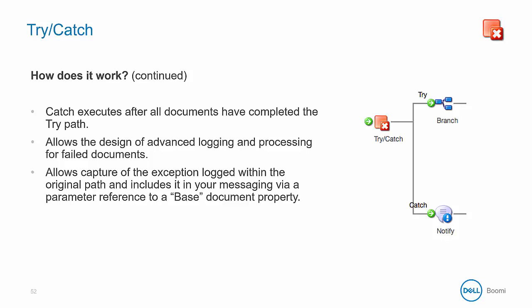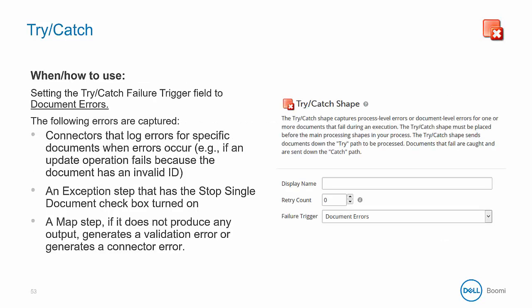You can record and send this captured message and access it through the parameter reference to the base document property. If there are no failures, then documents will not flow down the catch path at all. The try-catch shape can be configured to catch process-level and/or document-level errors. Within the shape, the failure trigger setting is how this is configured.